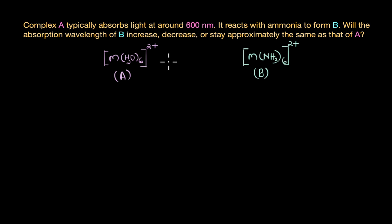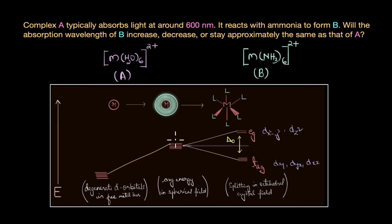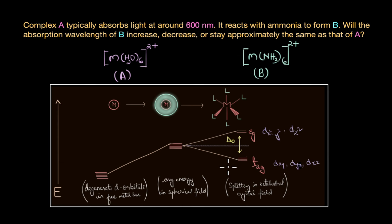In octahedral complexes like the ones given here, the ligands create an electrostatic field that causes the d orbitals of a metal ion to split into two different energy levels. The d orbitals that are otherwise degenerate split into two sets: the lower t2g orbitals and the higher eg orbitals. This energy difference between these levels is what we refer to as the crystal field splitting energy, and it is denoted by delta naught.